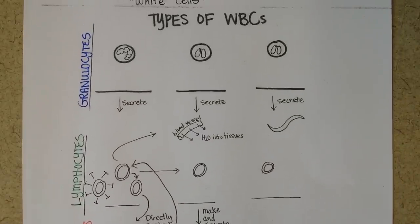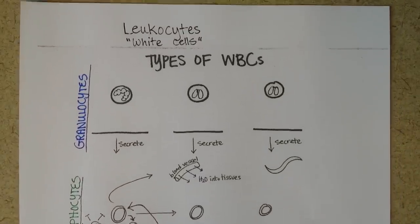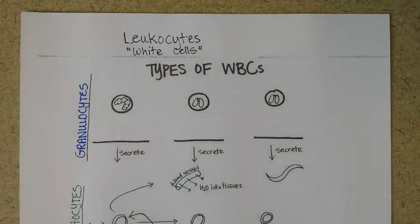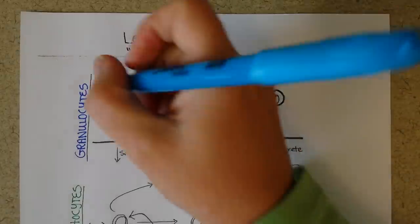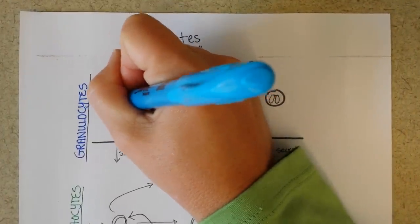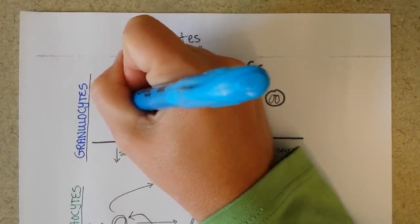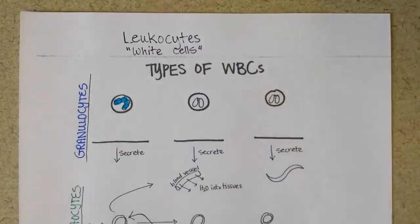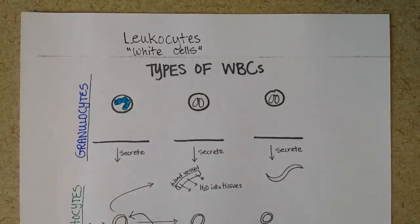Let's go back up to the top and look at the granulocytes. The first kind of granulocyte is very common in your bloodstream. Maybe as many as 70% of the white blood cells circulating at any given time may be this kind of cell, which is a neutrophil.